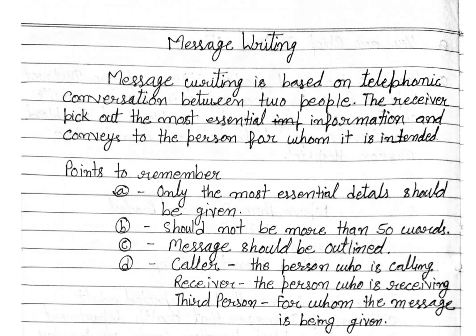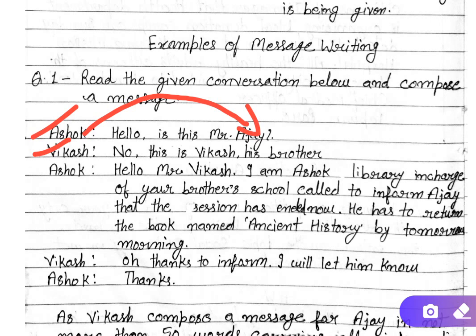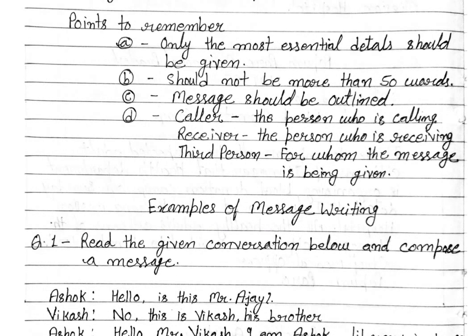We came to know who the caller is, who the second person is, and who the third person is. The caller is the first person who is calling. As we saw in the example, Asok is the caller, Vikas is the receiver, and there is a third person — Ajay — to whom Asok wanted to talk. But Ajay was not there, so Vikas got the message and will forward it to him. These were the three persons: the caller, the receiver of the call, and the person for whom the message is being given.